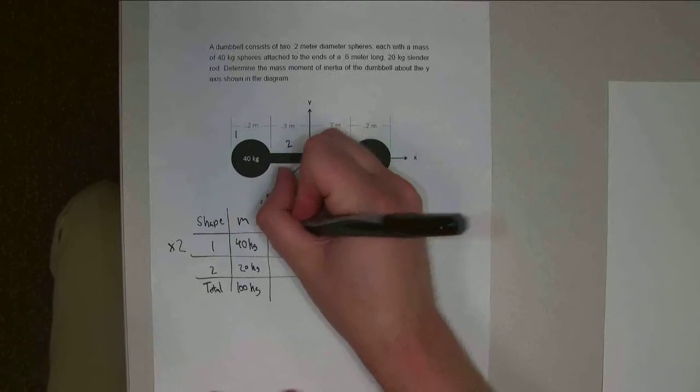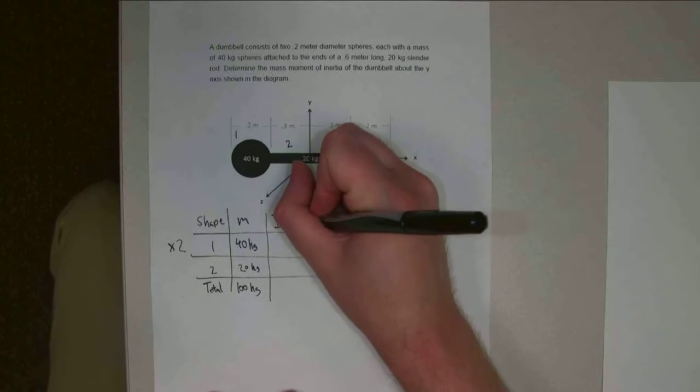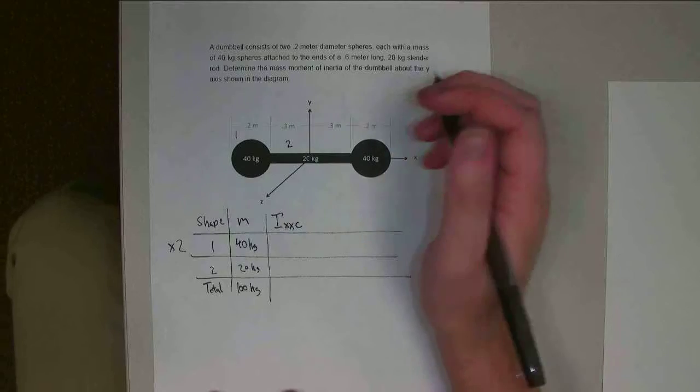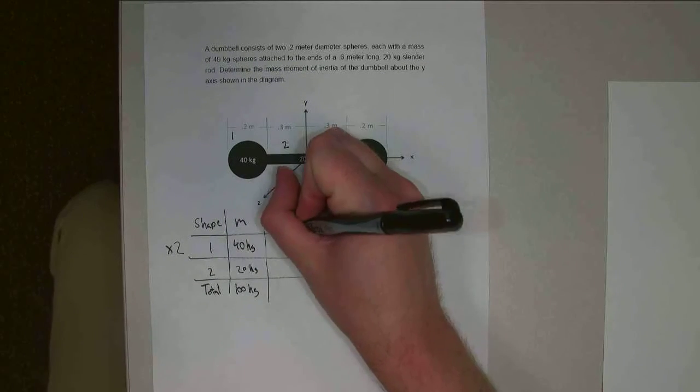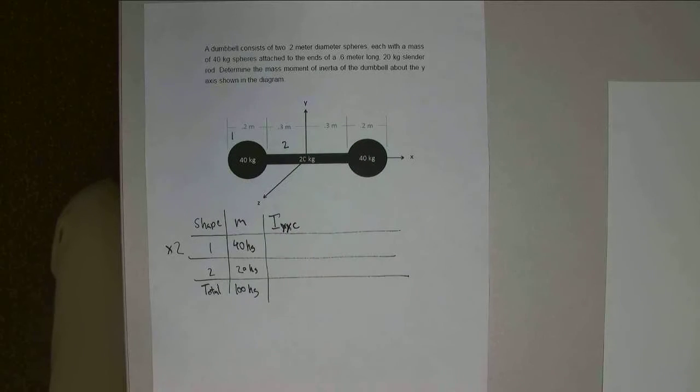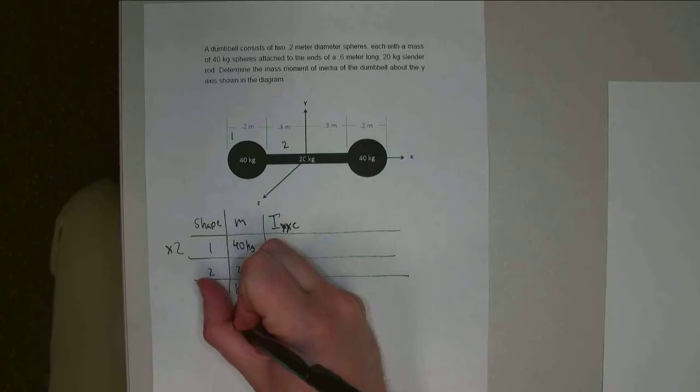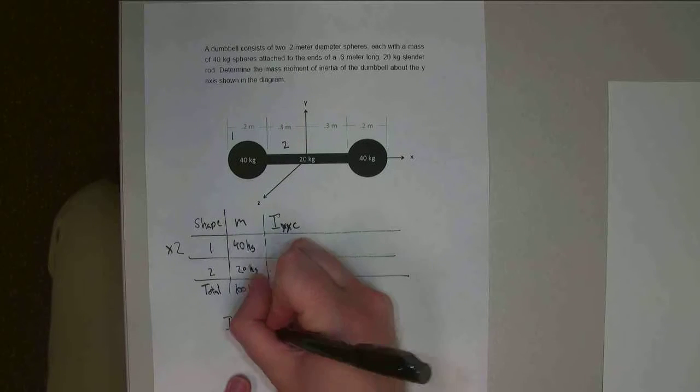All right, next I'm going to look at Iyy through the centroid of each of those shapes. So, or sorry, this should be Iyyc, since we're doing this about the y-axis. All right, so Iyyc1.